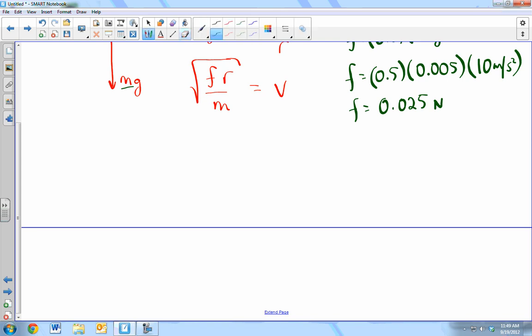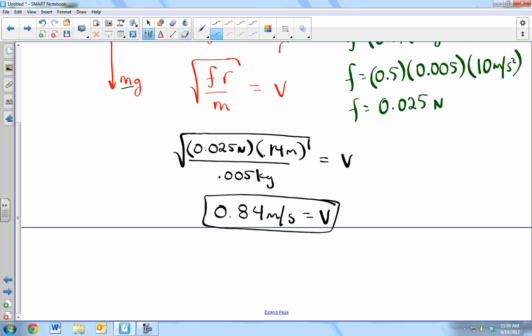That's going to be important for the last question. So let's go ahead and finish up what we've got here. Square root of friction, 0.025 newtons, times the radius. What was the radius? 0.14 meters. Divided by the mass, 0.05 kilograms equals velocity. And what's that? 0.25 point 1.4. 5 by 0.05, root of that, 0.184.